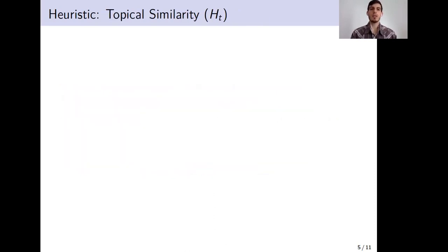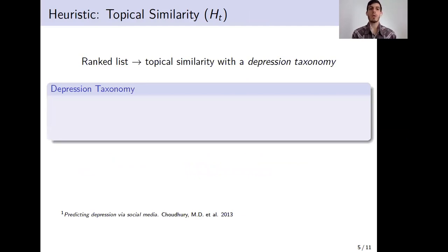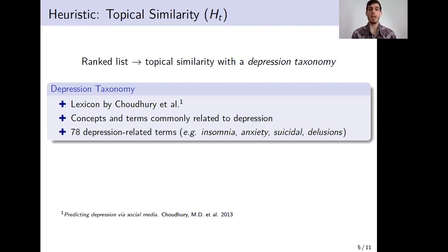The second heuristic is based on the topical similarity. Basically, we want to obtain a ranked list, that is, a list of posts sorted by the topical similarity with a depression taxonomy. To create this depression taxonomy, we start with a lexicon developed by Chaudhury and colleagues, and we extend such lexicon with all possible online vocabularies with concepts and terms commonly related to depression. Finally, with the aid of human experts, we obtain a subset of 78 depression-related terms. This taxonomy includes words such as insomnia, anxiety, delusions, and many others.